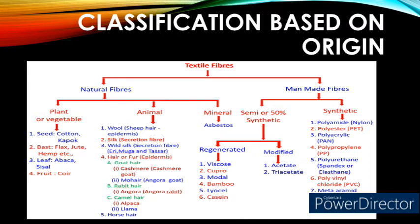Man-made fibers — that is, textile fibers generated by man using chemicals — are further classified into semi-synthetic man-made fiber and synthetic man-made fiber. Semi-synthetic man-made fiber means the raw material is from a natural source and the textile fiber conversion is done using chemicals.